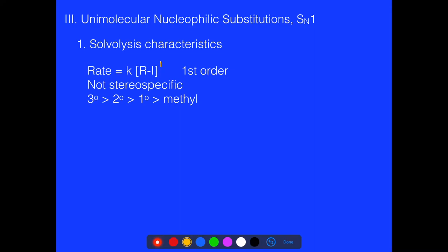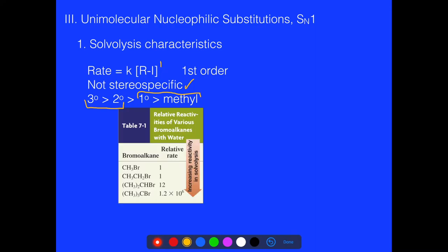Unlike SN2, where R always goes to S, SN1 reactions are not stereospecific. If we start off with an R configuration, we're going to get a mixture of R and S enantiomers at the end. We also find out that tertiary and secondary substrates react the quickest, while primary and methyl are slower.